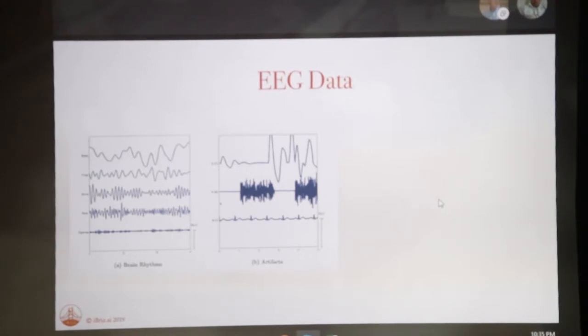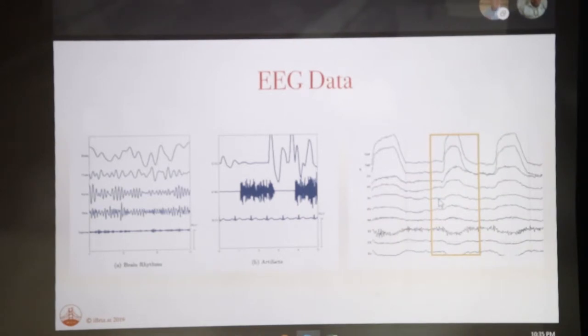But then overlaid on that are all sorts of artifacts. Here we have shown an artifact from the eyes, like blinking or looking around, artifact from the muscles, artifact from the heart. You put all that together, this is pulled out from every electrode. So all of these signals are overlaid on the voltage from each electrode.